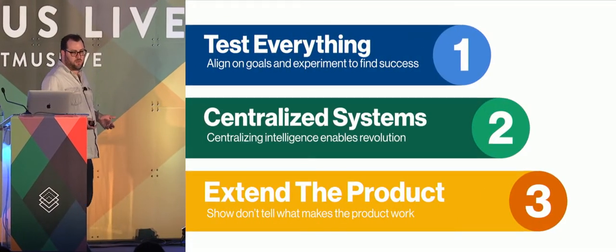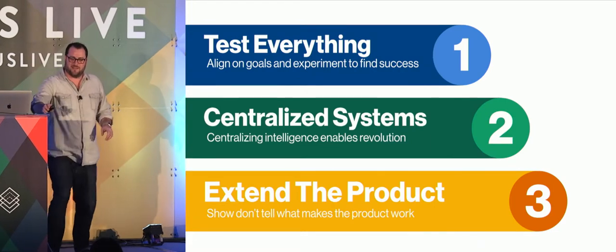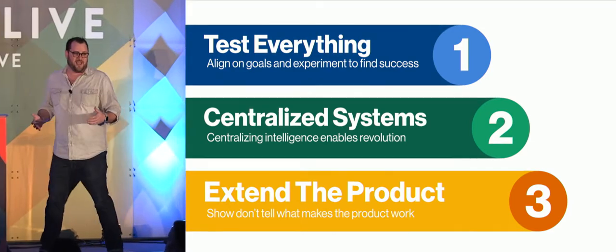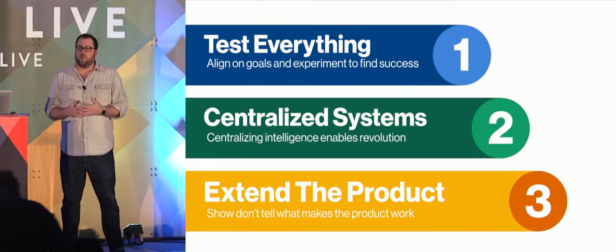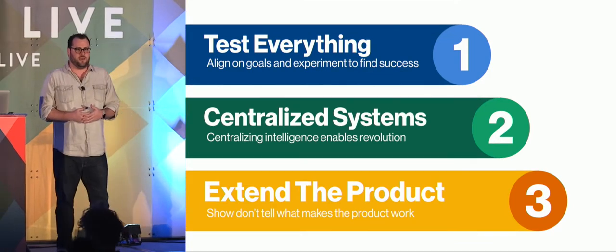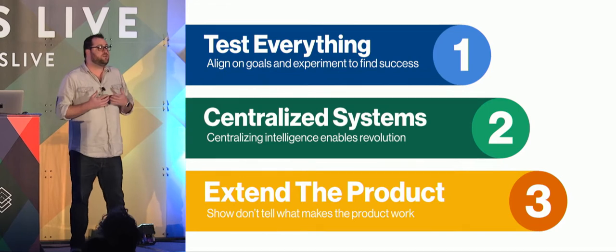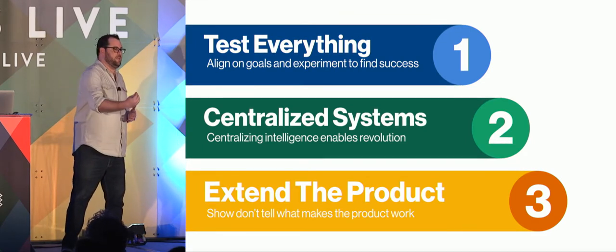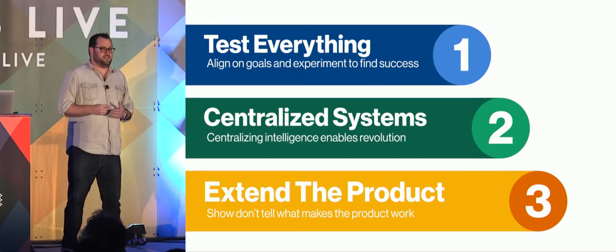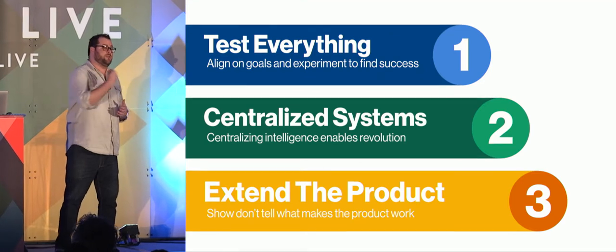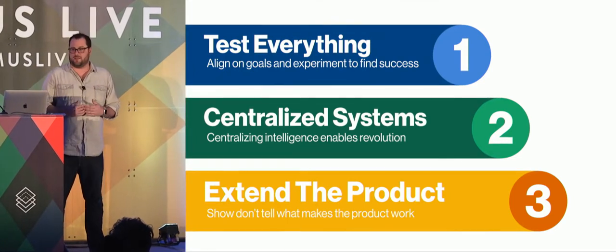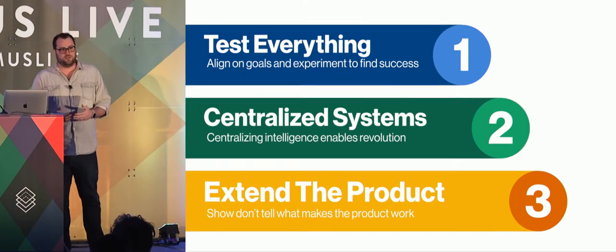There are three core principles that we've applied: testing everything, centralizing our systems, and understanding how to extend our product value into emails. Our product value is machine learning personalization, and that's why it's successful to put that in the emails. Not every company needs machine learning automation to back their email content — for Pinterest, it's the only thing that makes sense because that is our value as a product.